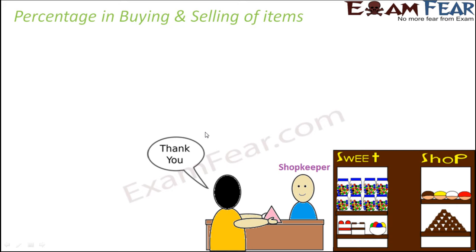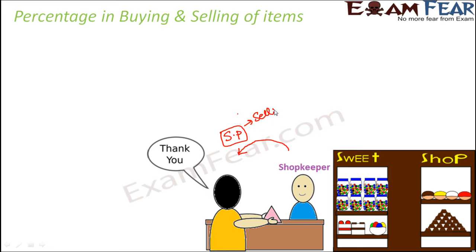Percentage also plays an important role in buying and selling of items. Let's say there is a shopkeeper selling goods to customers. Let's take the example of a book. The shopkeeper sells a book to a customer. The amount that the customer pays to the shopkeeper is called the SP, which is nothing but the selling price.